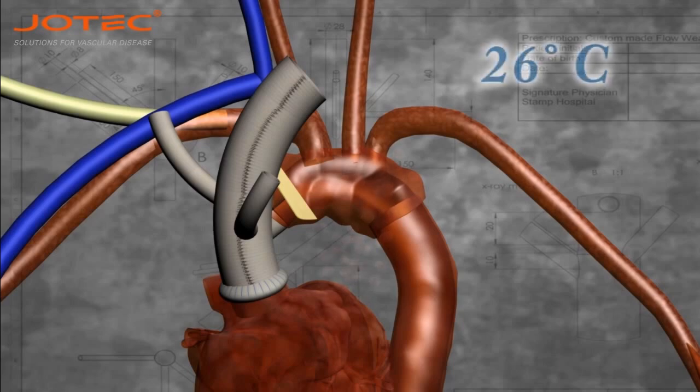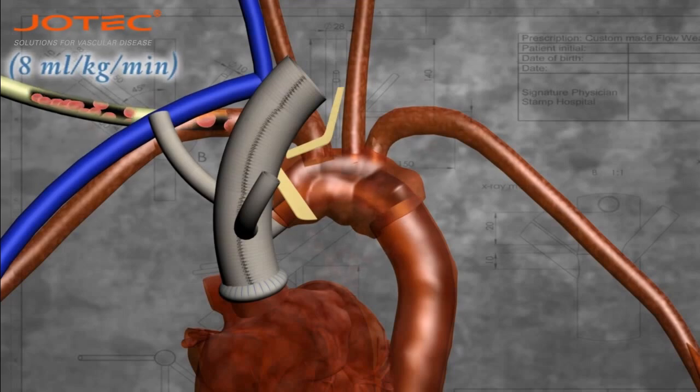Once the patient reaches 26 degrees Celsius, proceed with the circulatory arrest and the clamping of the anonymous trunk. The right carotid artery will be perfused through the cannula placed in the right auxiliary artery.